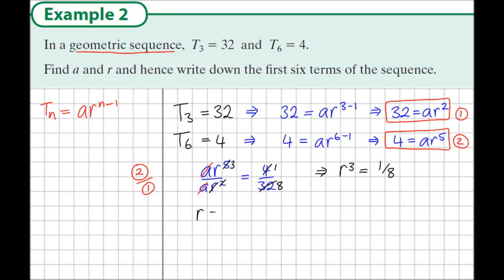Now if r³ is 1/8, r is equal to the cube root of 1/8, and if you use a calculator you'll see that the cube root of 1/8 is 1/2. So now we know the value of r. This is one of the things we're asked for. r is the common ratio, and the common ratio is 1/2 in this geometric sequence.